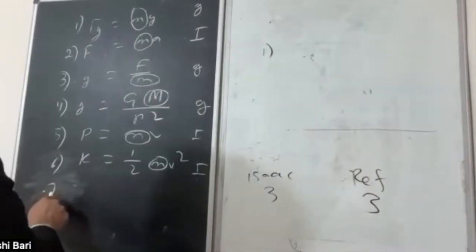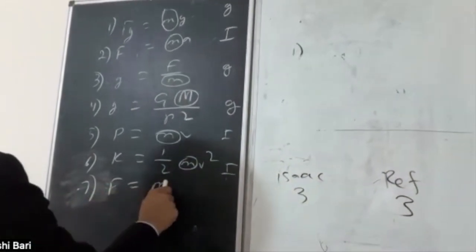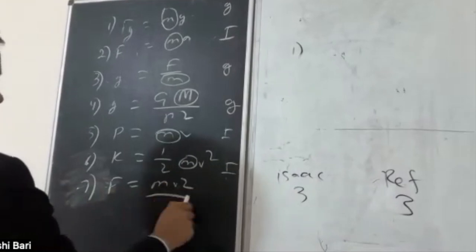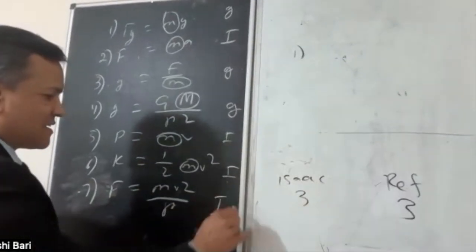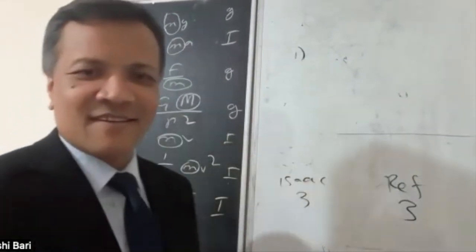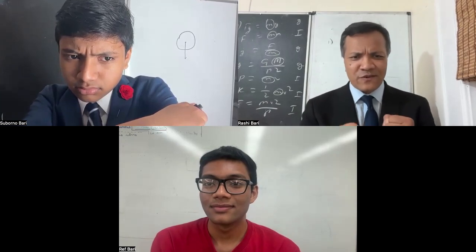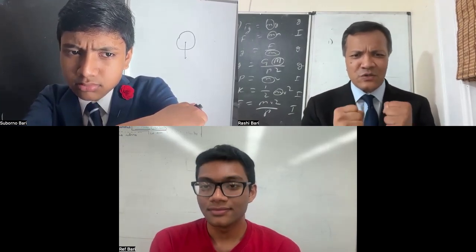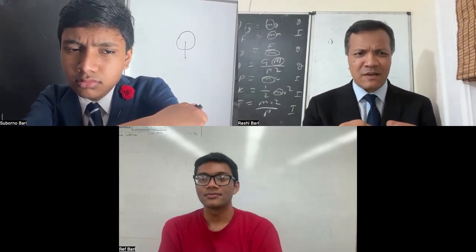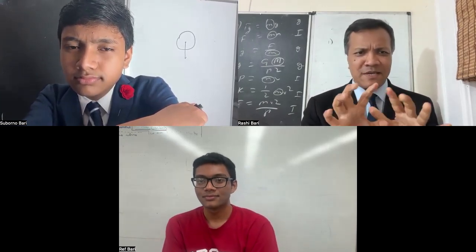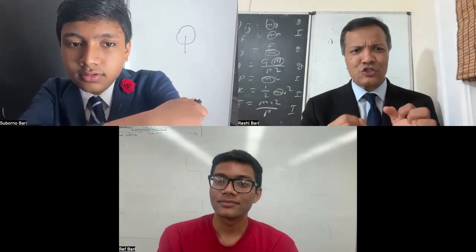What about this one? Number seven, F is equal to Mv² over R. Inertial. We understand that in our universe, there is no difference between the gravitational mass and inertial mass. Is that right? Yeah.